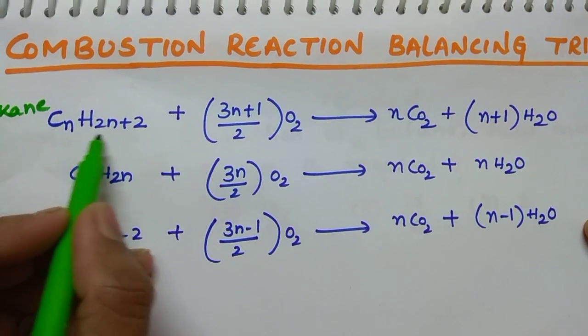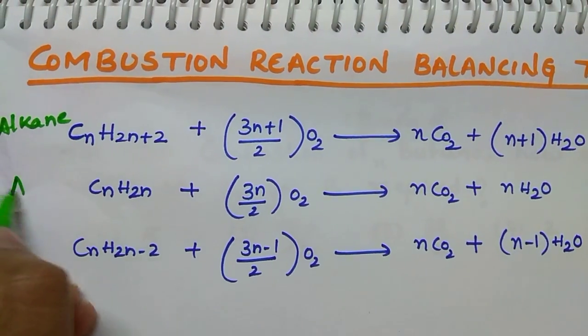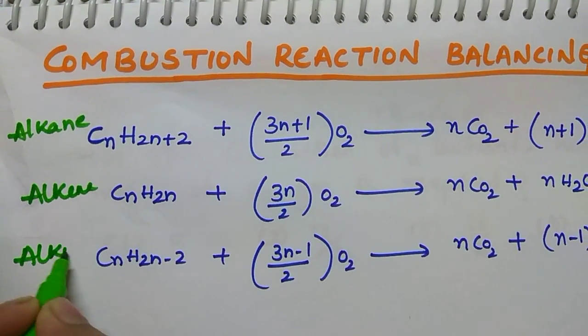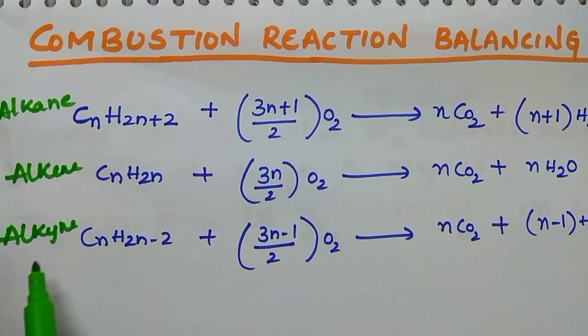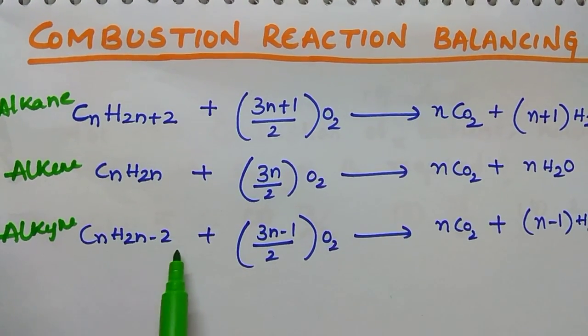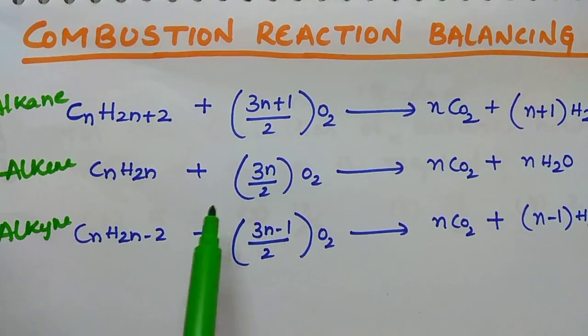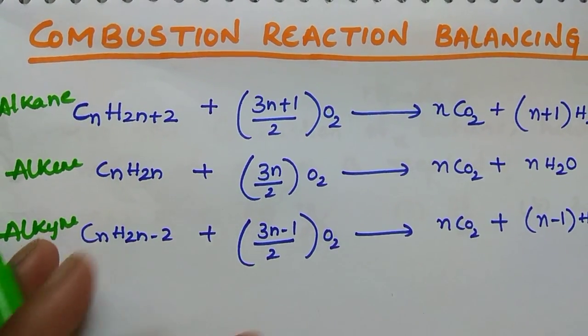Alkane general formula CnH2n+2, and this is for alkene. Alkene general formula CnH2n. Alkyne general formula CnH2n-2. By using these three formulas you can balance combustion reactions.